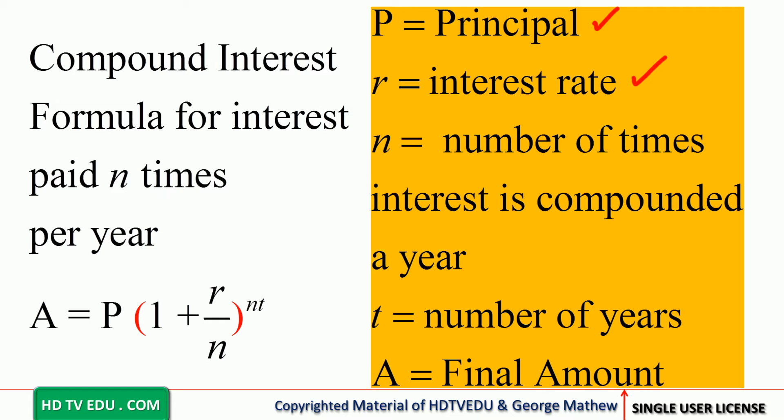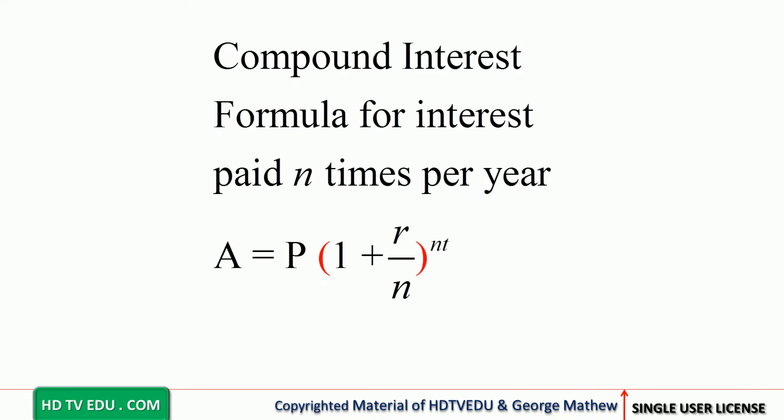T is the number of years. A is the final amount. So the compound interest formula for interest paid n times per year is A = P times (1 + r/n) to the power of nt.